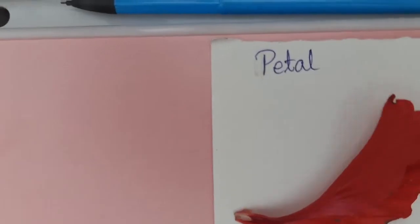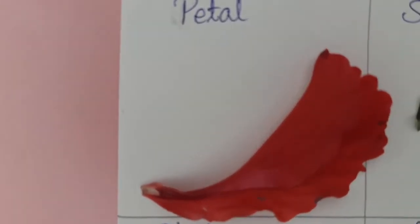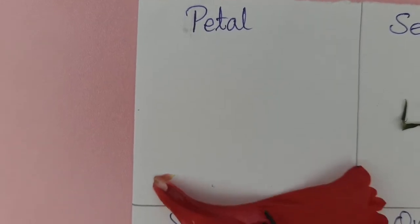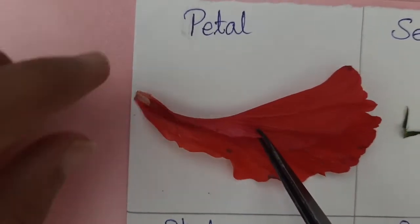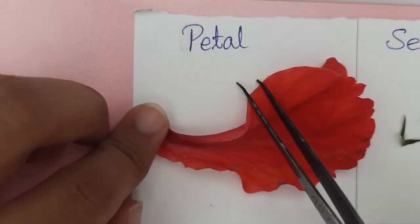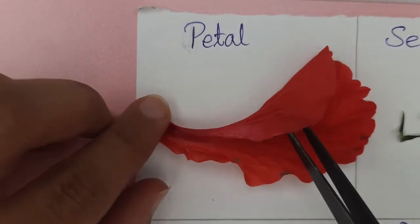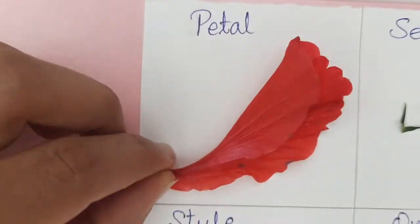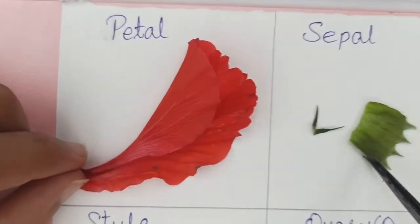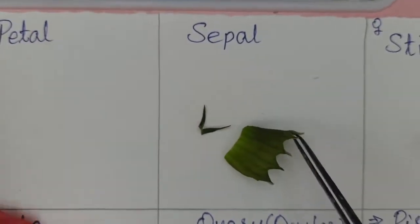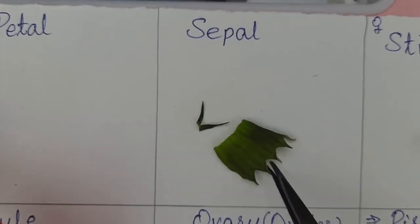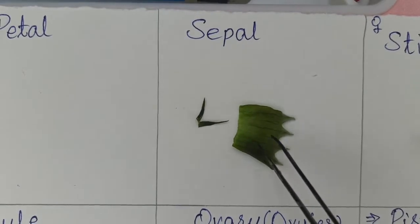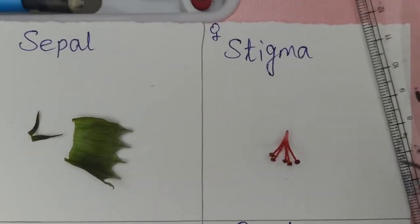Here on this piece of paper I have separated all the parts for you. Here is a petal which is bright in color and is used to attract the insects towards the flower. This one here is the sepal. The sepal protects the flower when it is a bud.